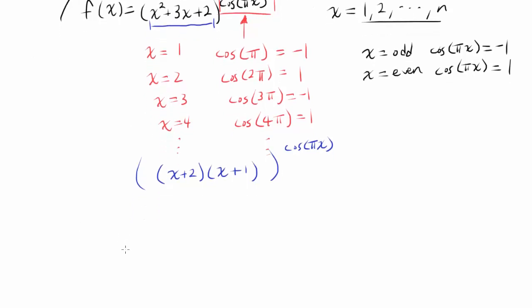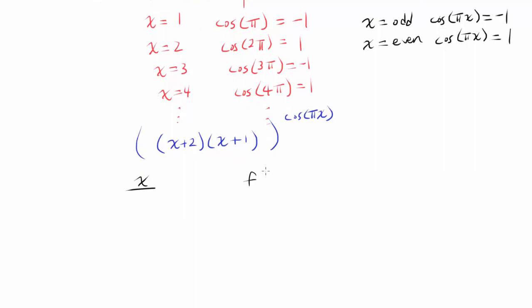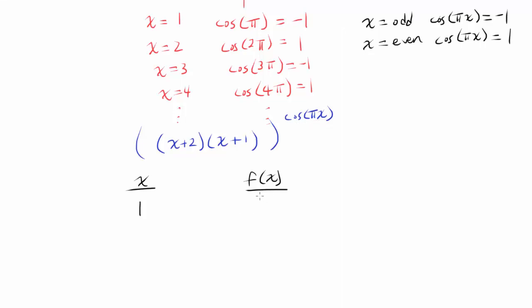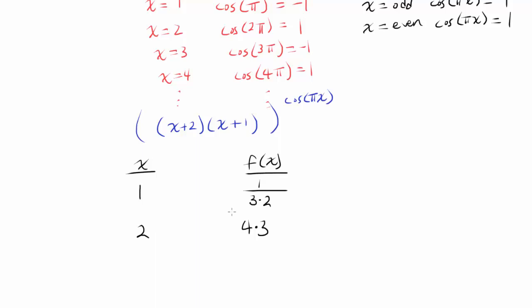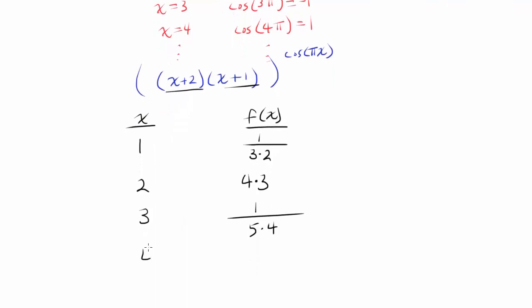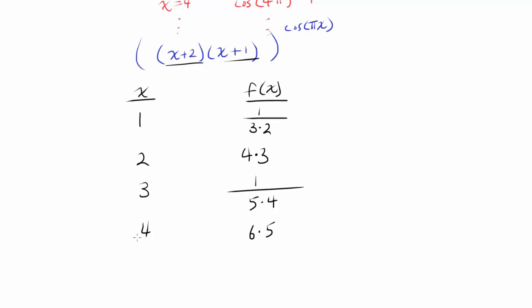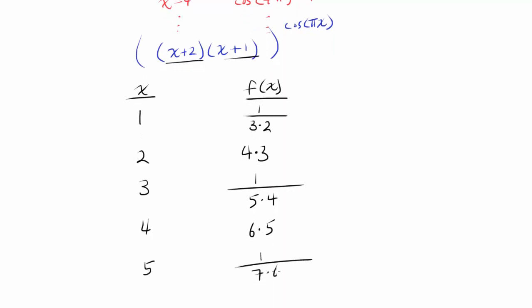Let's evaluate f of x for specific integer values. When x is 1 (odd), we get 3 times 2 raised to negative 1, which is 1 over 3 times 2. When x is 2 (even), cosine of pi x is 1, so we get 4 times 3. When x is 3 (odd), we get 1 over 5 times 4. When x is 4 (even), we get 6 times 5. When x is 5 (odd), we get 1 over 7 times 6, and so on.